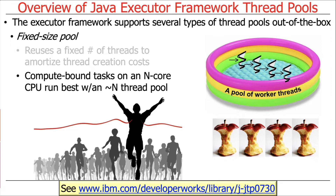For compute-bound tasks — those that don't block on I/O — on an n-core CPU, performance is typically best when the number of threads in the pool is roughly equivalent to the number of cores. There's no point having more than n threads for a compute-bound job with n cores, because those extra threads won't get a chance to run.